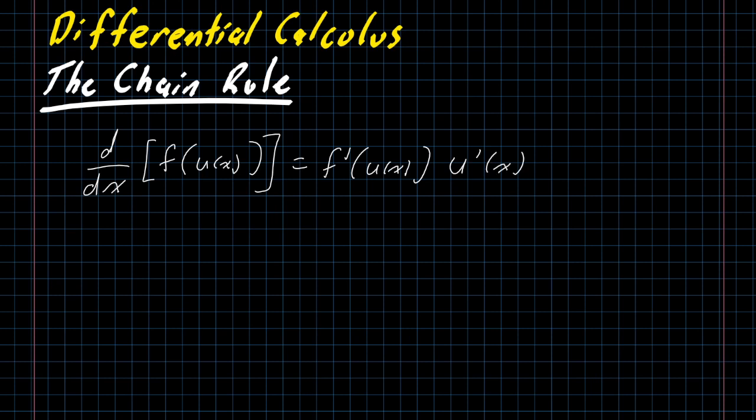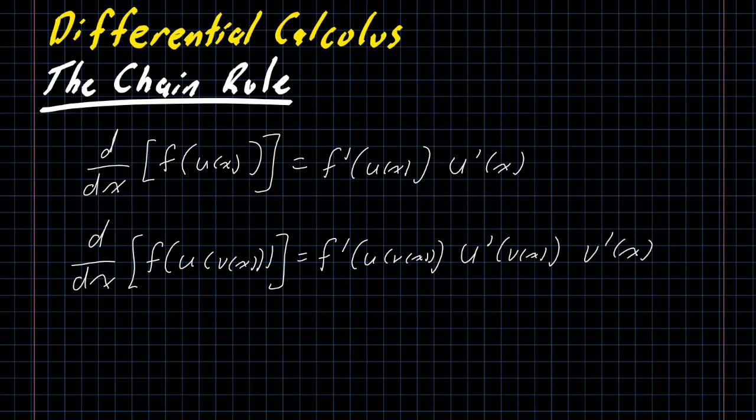So this is what we mean by the chain rule. We're going to chain together the derivative of our starting point with the derivative of our argument. And if we had a more complicated chain, if we had f of u of v of x, it would just extend the chain a little bit further: f prime of u of v of x times u prime of v of x times v prime of x. Every step taking the derivative of the argument. So we just chain all of these derivatives together. That's literally where the name comes from.